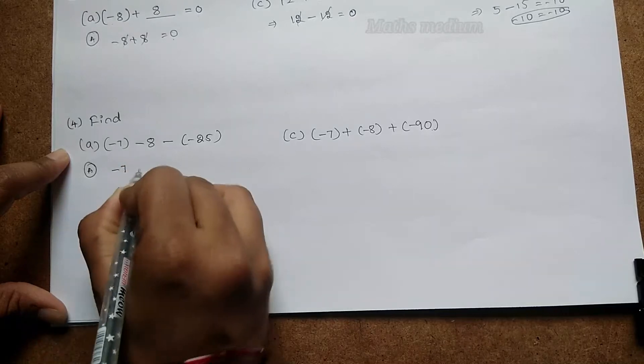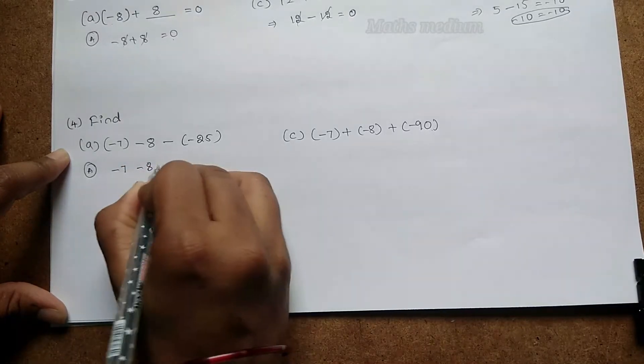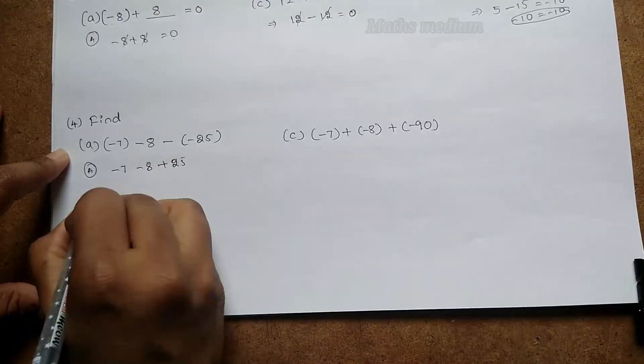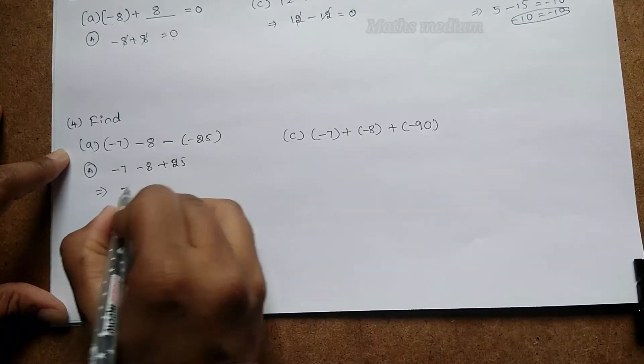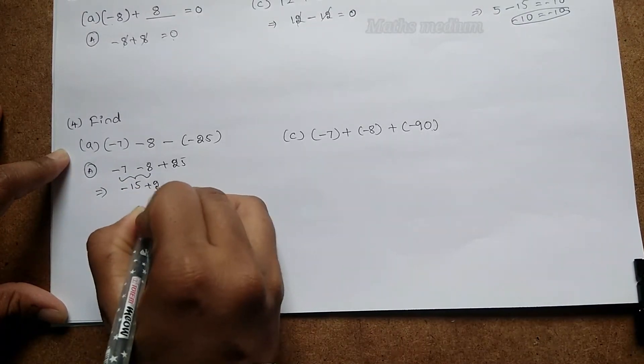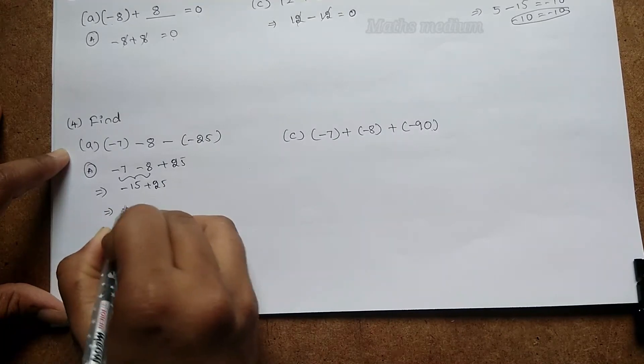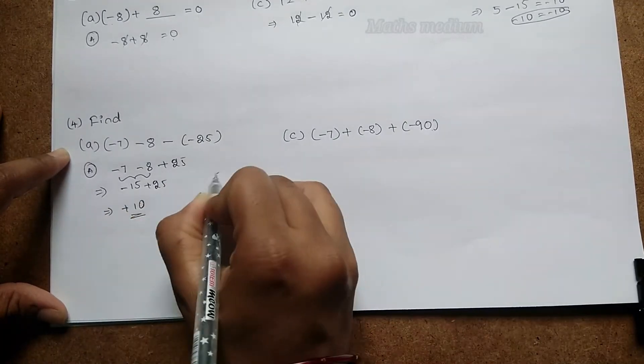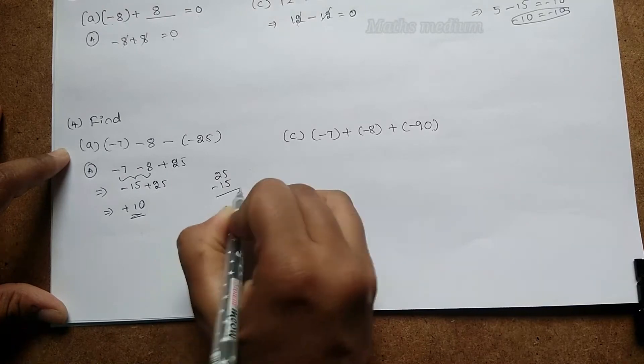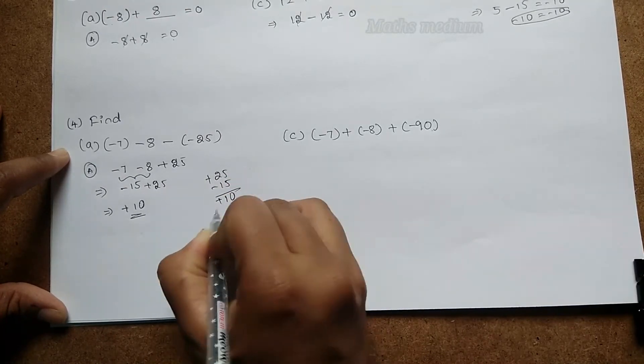So (-7) - 8, minus into minus we get 25, here -15 by adding these two plus 25. So the answer is +10 because 25 - 15 = 10, so positive 10 is the answer.